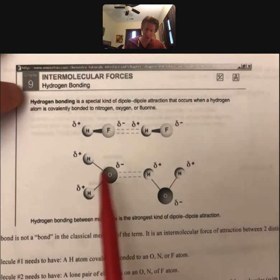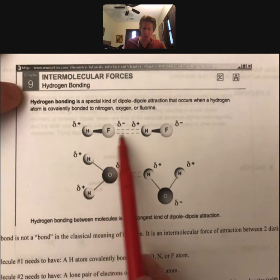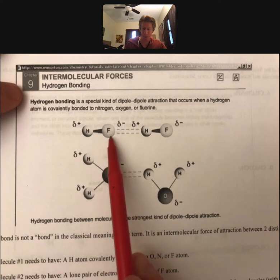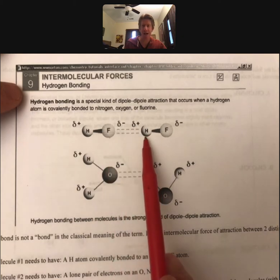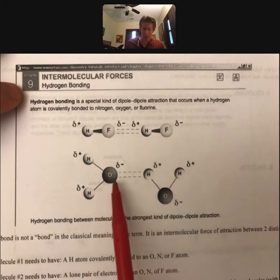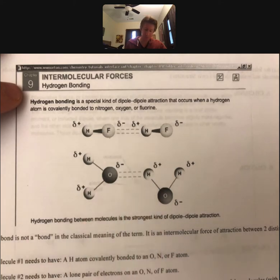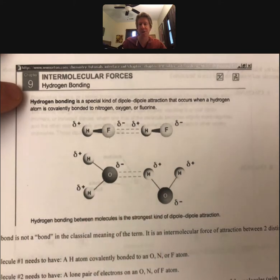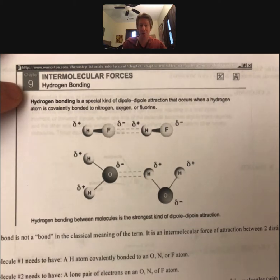We've got two examples of hydrogen bonds shown here, one between a fluorine on one molecule and a hydrogen on another molecule, one between oxygen and a hydrogen. The one that's not shown and we'll be showing in the examples is going to be one between a nitrogen and a hydrogen.